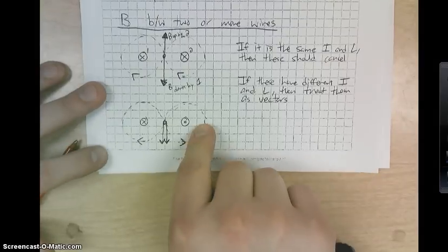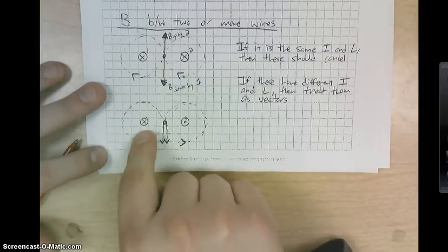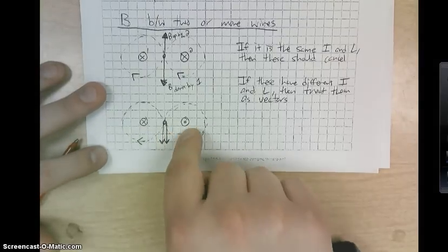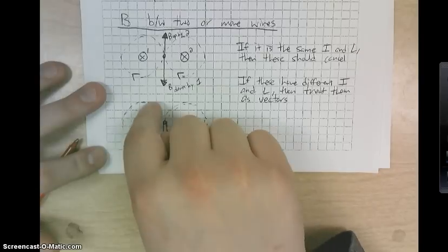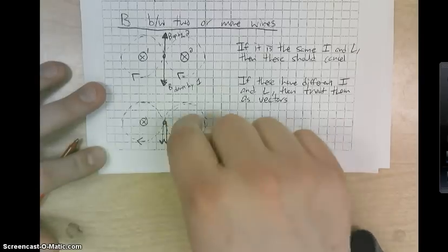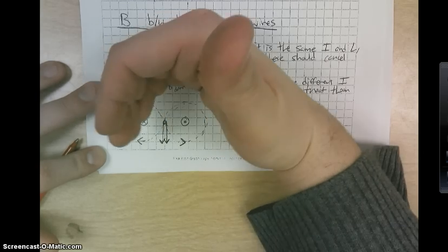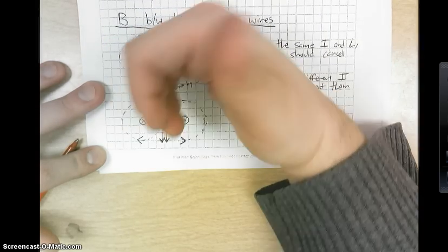Now, a different situation here would be: what happens if we have one in and one out? Well, again, for the one in, the direction of the field is always clockwise, but for the one out, we're looking at it being counterclockwise.